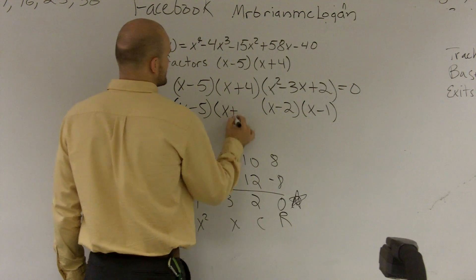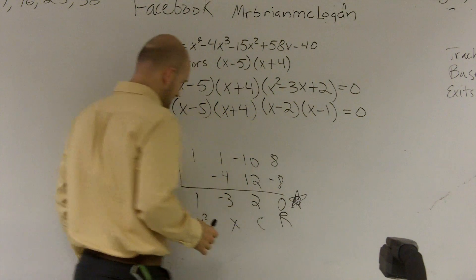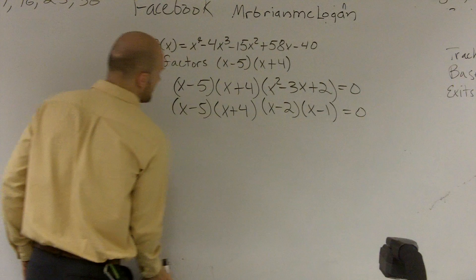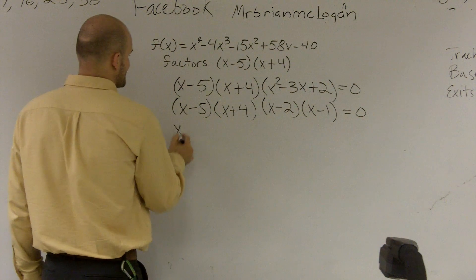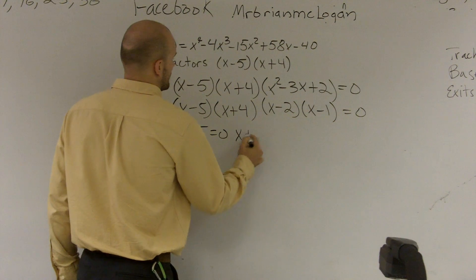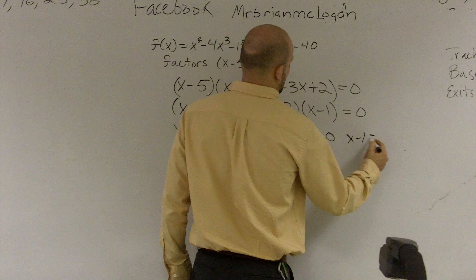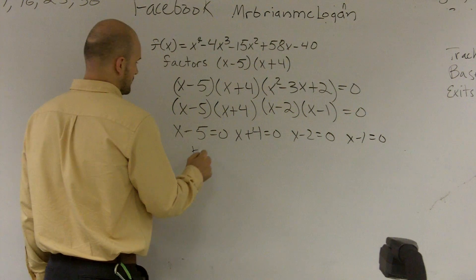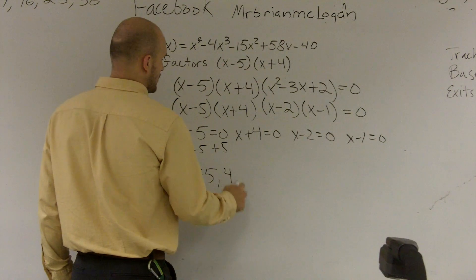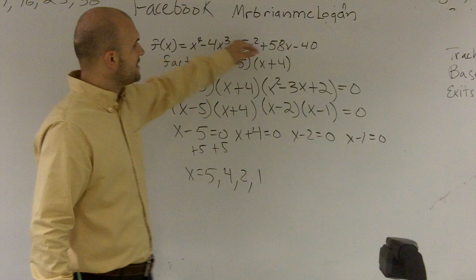So I still have my original two factors, but what I notice is now I have a set of four zeros, or four factors. So when I want to find all my zeros, I set each and every one of these equal to 0. Therefore, when I add 5 to both sides, x equals 5, 4, 2, and 1. So those are the list of all my zeros up there, and that's how you verify by using synthetic division.